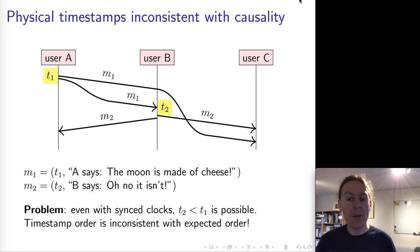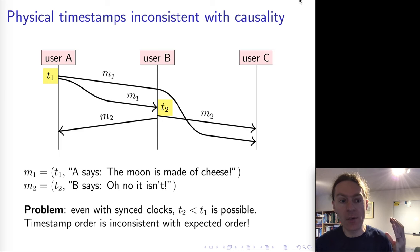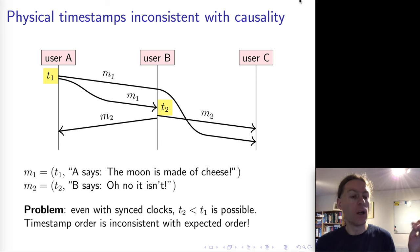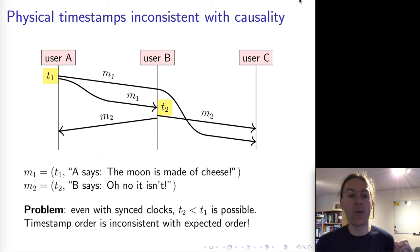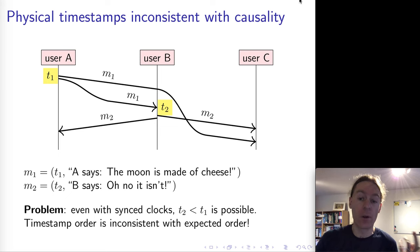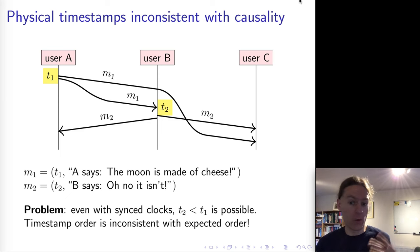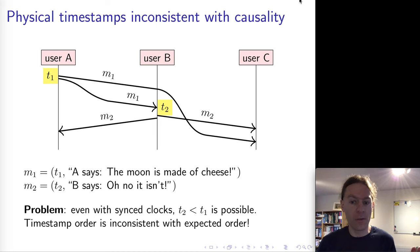As background, remember this slide from the last lecture where we had the case of two messages. First, message one is user A says the moon is made of cheese. Message two is user B replies to M1 saying, oh no, it isn't. What could happen with physical clocks is that the timestamp of message one ends up being greater than the timestamp of message two.